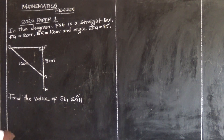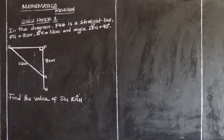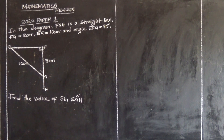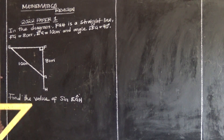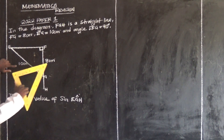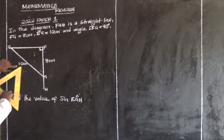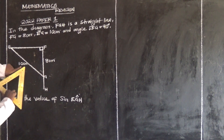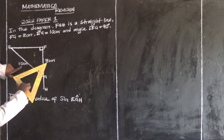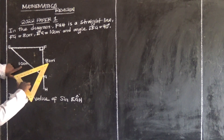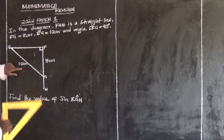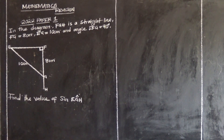This type of triangle is called a right-angle triangle because it has an interior angle of 90 degrees. Now we have two sides: this one is 10cm and this one is 8cm. The third side is not given.